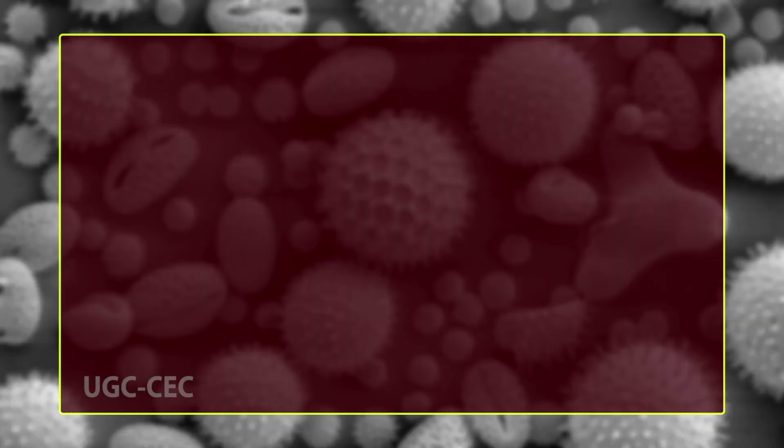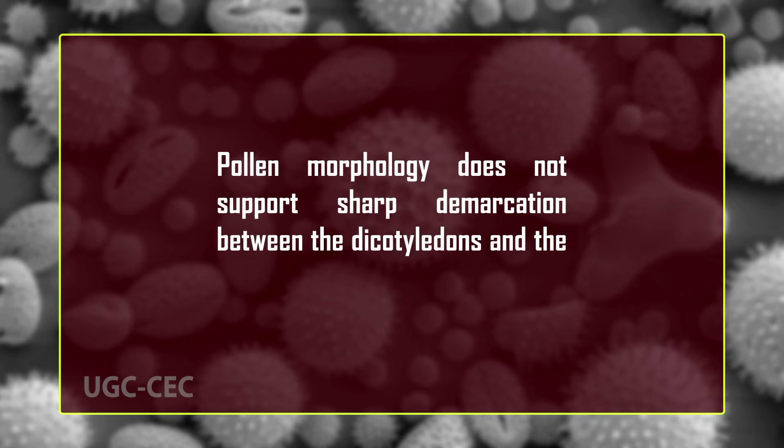Palynological studies have been very useful in the elucidation of phylogenetic relationships. For example, pollen morphology does not support a sharp demarcation between the dicotyledons and the monocotyledons as suggested by some systems of classification, because dicotyledon pollen characters also occur in some monocotyledons and vice versa.